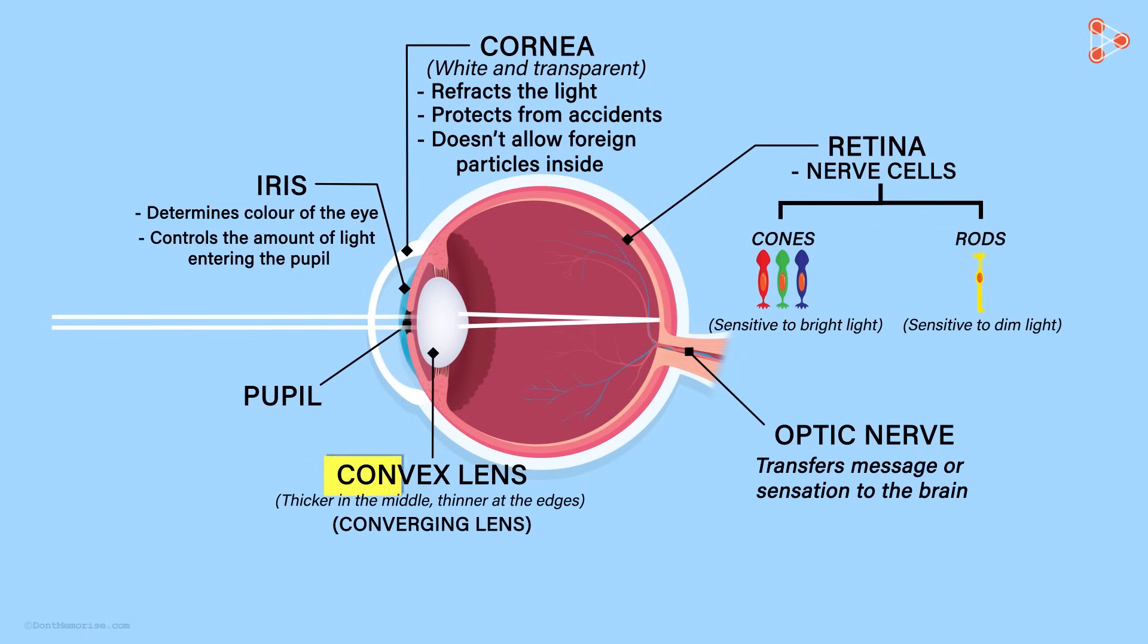Behind the pupil, there is a converging lens which focuses the light on retina. Retina consists of two types of nerve cells: cones and rods. They transfer the message through the optic nerve. There is a lot of information to digest.